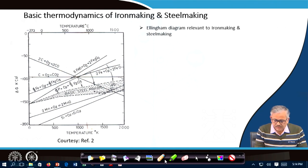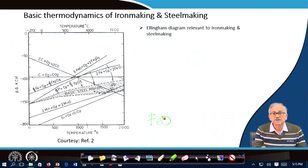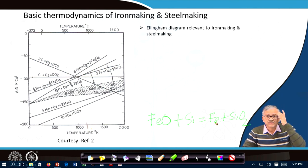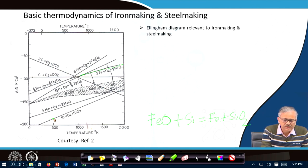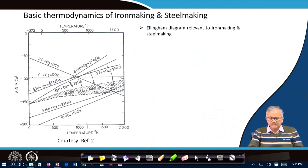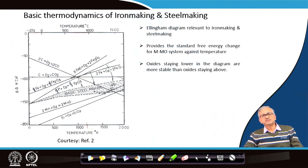Silicon will be able to reduce iron oxide because FeO is unstable in the presence of silicon — silicon oxidizes to silica and iron oxide is reduced to iron. The silica line in the Ellingham diagram is always much below the Fe-FeO line. An oxide staying lower in the diagram is more stable, and an element whose oxide is lower can reduce any oxide above it. The diagram also provides the temperature dependence of relative stability.